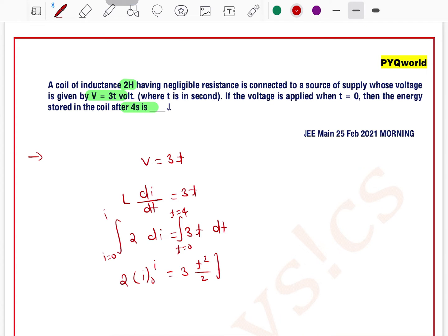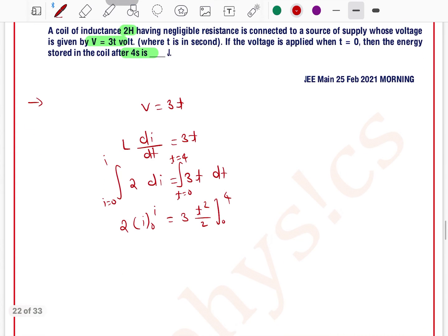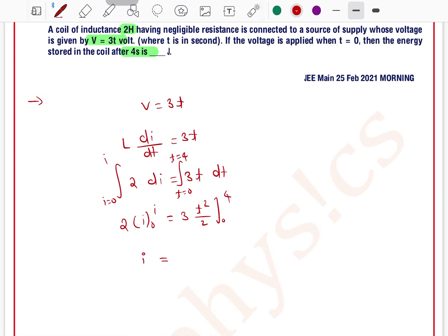Current I equals 3T squared over 2, from 0 to 4. So it will be I equals 3 by 2 times 4 squared minus 0. So I equals 12 amperes.